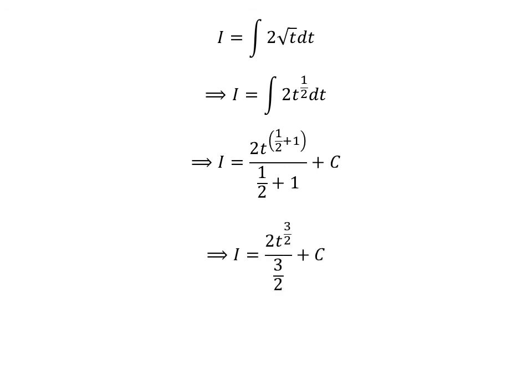We know one half plus 1 is equal to 3 upon 2, so i is equal to 2 times t raised to the power of 3 upon 2 divided by 3 upon 2 plus capital C. Further simplification gives us i is equal to 4 times t raised to the power of 3 upon 2 upon 3 plus capital C.